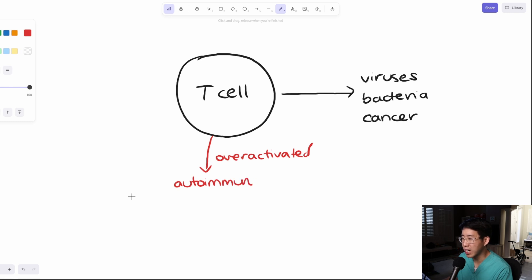So for example, lupus or thyroiditis or inflammatory bowel disease. These are all examples of when our own immune system gets too activated and it starts to recognize our own body as foreign, destroying our own cells.